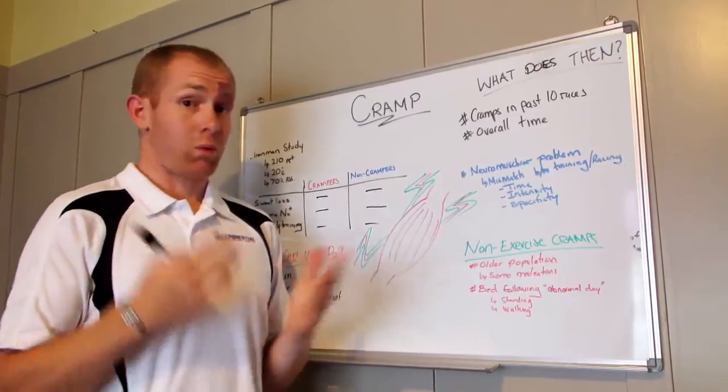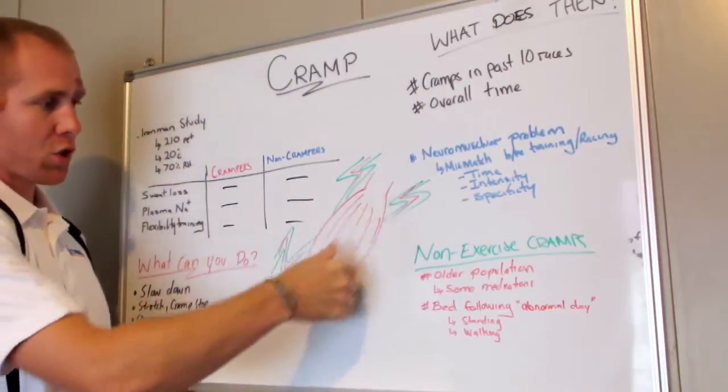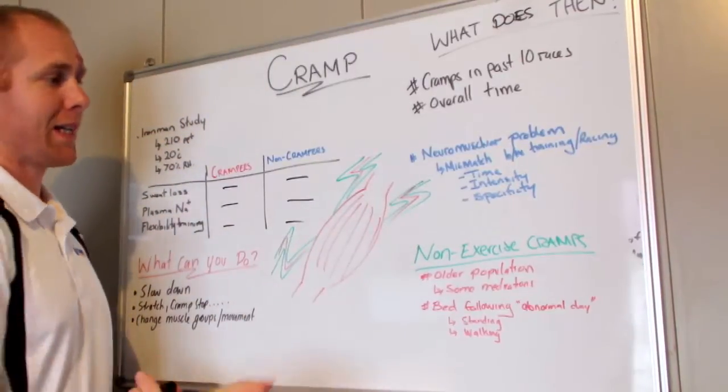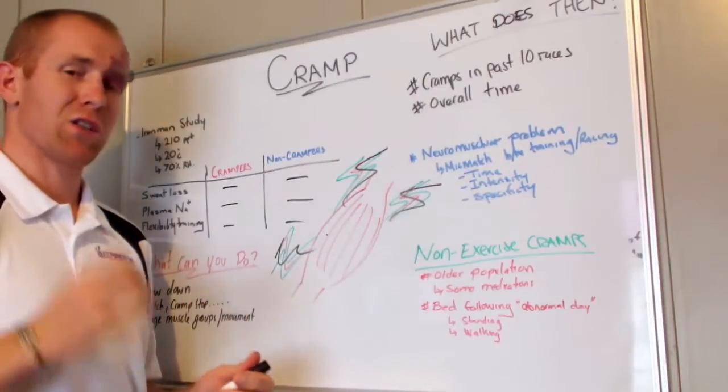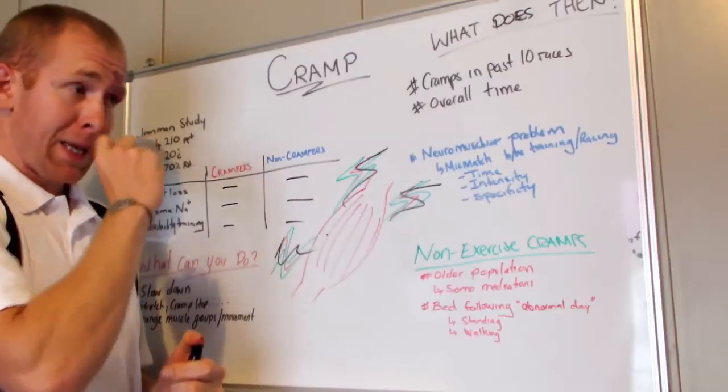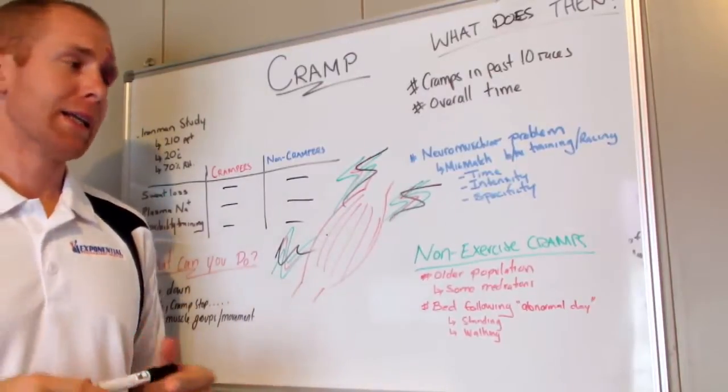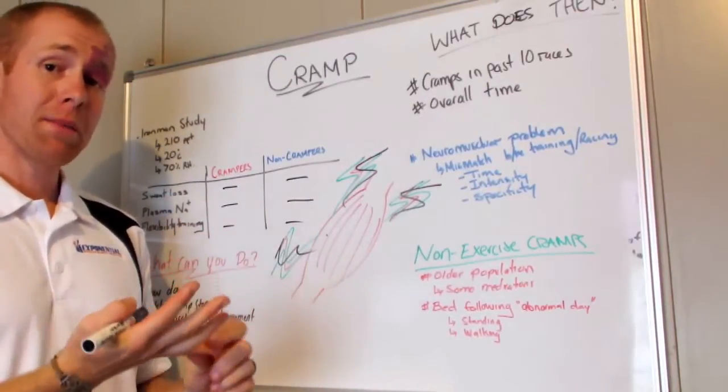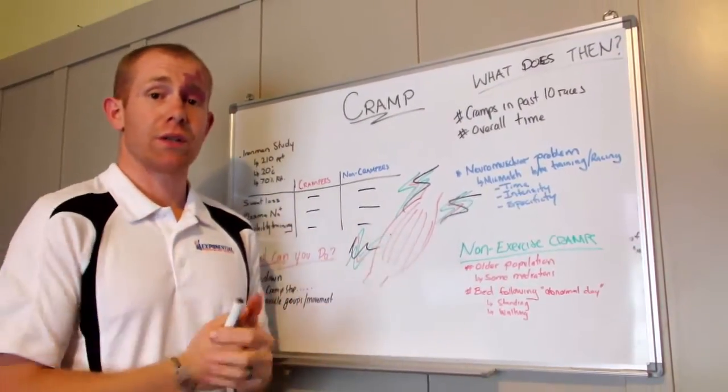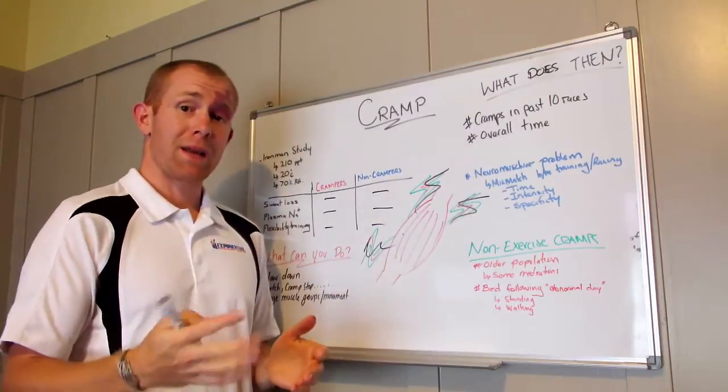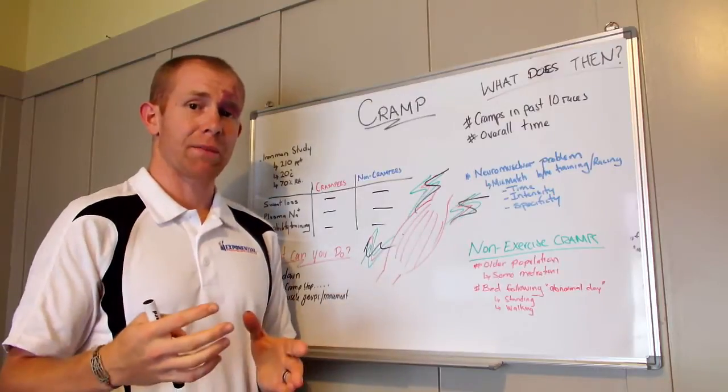So what is causing cramping? Well, most of the research points towards a neuromuscular problem. This is your muscle, and when we talk about neuromuscular, it's all the nervous pathways leading to the muscle and causing the muscle to fire. It seems to be mainly a mismatch between what happens in training and what happens on race day.